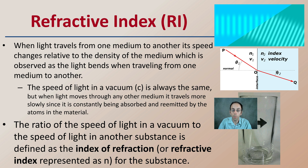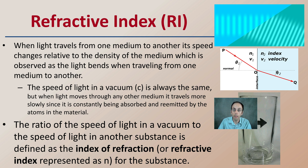The ratio of the speed of light in a vacuum to the speed of light in another substance is defined as the index of refraction, or refractive index, and it's represented in equations as the letter n for that substance. So here, n is referring to the refractive index.